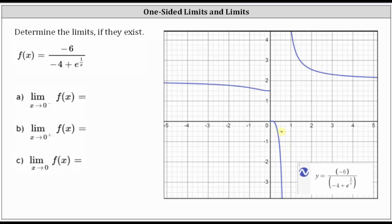We have the limit of f of x as x approaches zero from the left or negative side. Let's begin by graphing the vertical line x equals zero, which is the y-axis. For this first one-sided limit, we are only approaching zero from the left or negative side. Notice as we get closer and closer to x equals zero from the left, we can see we are approaching the y value of 1.5, which is the value of the limit as x approaches zero from the left.